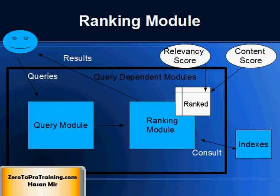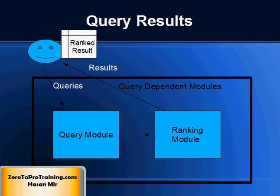Many rules are used to give each relevant page a relevancy or content score. Indexes are consulted in this process as well. The set of relevant pages resulting from the query module is then presented to the user in order of their overall scores.